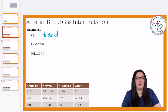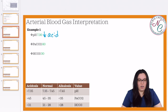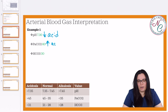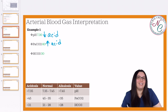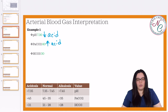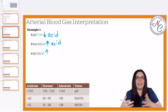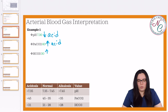Next we move on to our PaCO2. It's 60. Normal is between 35 to 45. We know that this number is high — greater than 45 — making us more acidic. Lastly, we look at our HCO3. Our HCO3 is 30. This is also high, but for a different reason. When our bicarb is high, that means there's less acid relative to the bicarb, so we know that this is going to be more of an alkalotic state.